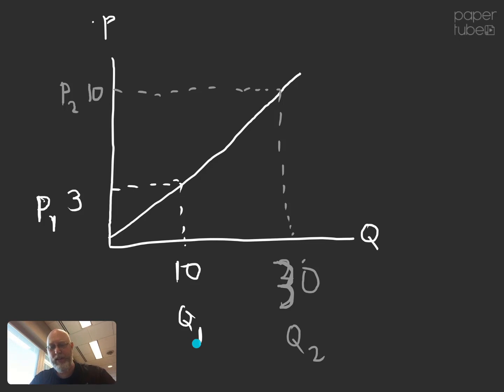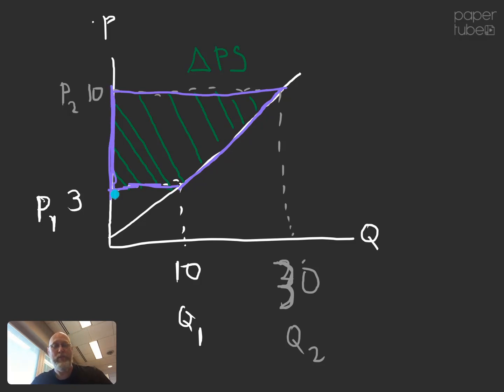And what we're interested in is this area in between the two prices and above the supply curve. Because that is our change in producer surplus, delta PS. Now a lot of times students will see this and they'll call this producer surplus. That's incorrect. This is the change in producer surplus. And what I want to point out to you is this shape. This shape right here is a trapezoid.